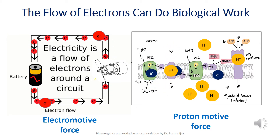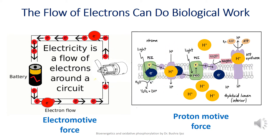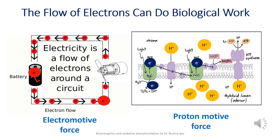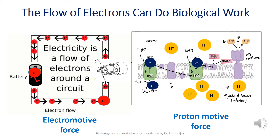The flow of electrons within biological systems can do a lot of biological work. For example, every time we use a motor, an electric light, a heater, turn on a car, or spark to ignite gasoline in a car engine, we use the flow of electrons to do work. Consider a circuit on the left side of this slide: the power provided to a motor — the source of electrons in this case can be a battery, which contains two chemical species that differ in affinity for electrons. The electrical wires provide a pathway for the flow of electrons from one pole to the other pole of the battery.